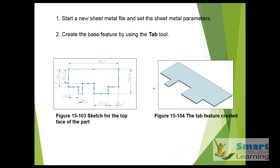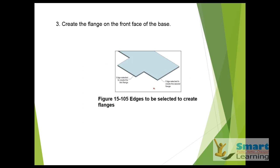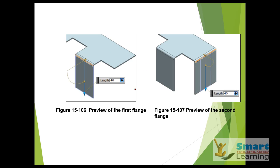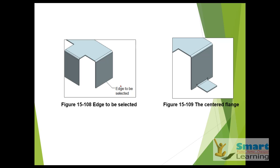After that you will be moving to the edges where you will be creating the flange walls — one is shown here at this particular edge and here with the specified length of 40. After that you will be selecting this particular edge and positioning the center flange.